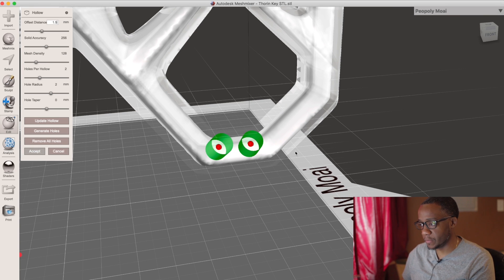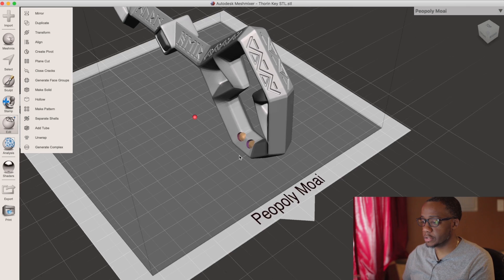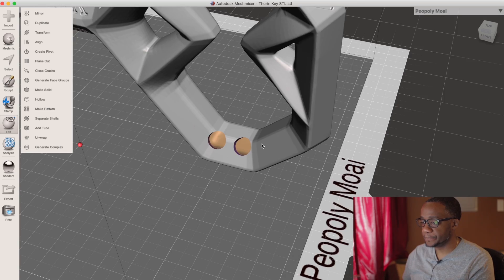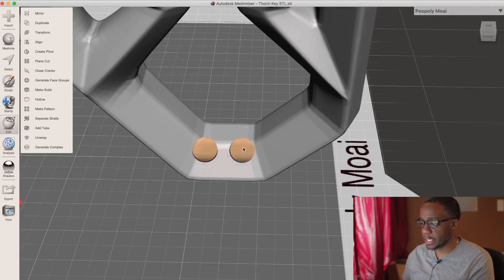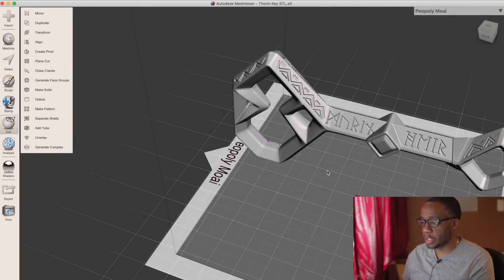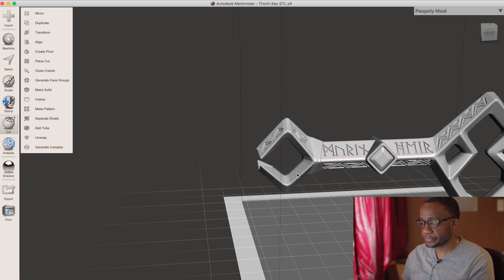So this is good. I'm going to accept and we'll give it a minute to run. All right, so we have our key with the holes and it's hollowed out. We're going to export this out.